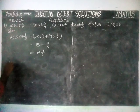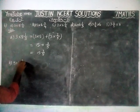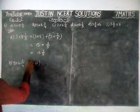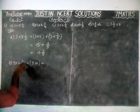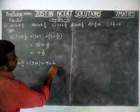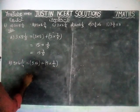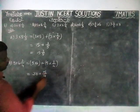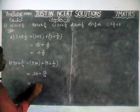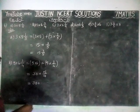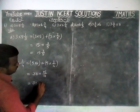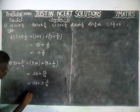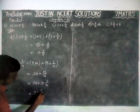Next, option B: 5 into 6¾ is equal to. We have to multiply the whole part first. 5 into 6 plus 5 into 3 by 4 is equal to. 5 sixes are 30 plus 5 threes are 15 divided by 4. This is an improper fraction, so we are going to convert into mixed fraction. In 15, we have 3 fours, 3 fours are 12, remaining 3, so 3 by 4. Now we add the whole part: 30 plus 3 is equal to 33, so the answer is 33 and 3 by 4.